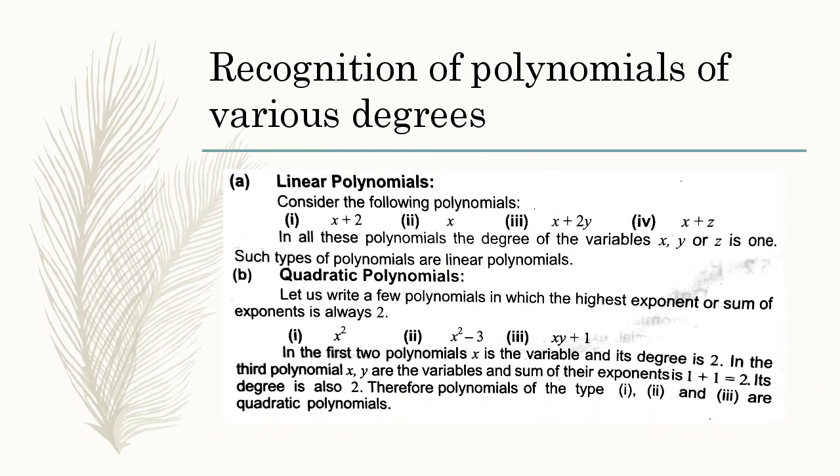First is linear polynomials. Consider the following polynomials: x plus 2, x, x plus 2y and x plus z. In these polynomials, the degree of variables x, y or z is 1. Such type of polynomials are linear polynomials which have degree 1.